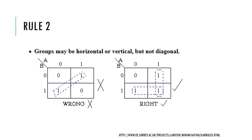Rule number two: we can form groups of ones that are adjacent. In the example shown, these two cells form a horizontal group of ones, and here is a vertical group — both are valid because those cells are adjacent. However, in the first map, these two ones cannot be grouped diagonally because diagonal cells are not considered adjacent. So rule number two is: horizontal and vertical groups can be formed, but not diagonal.